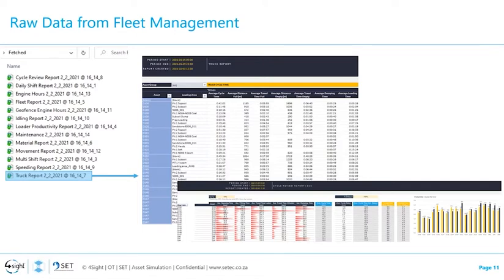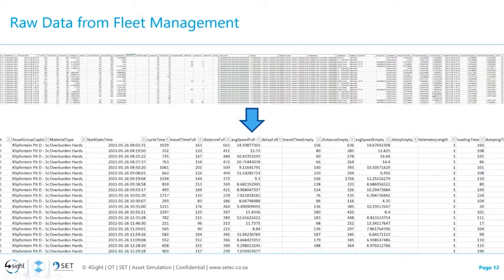Let's have a look at the data used for this example today. We extracted raw data from a fleet management system — specifically the truck data, which is a subset of the total data in the database. Here you can see an example of the data generated by the fleet management system, as well as simplistic reporting it can provide, with a zoomed-in view of what it represents.